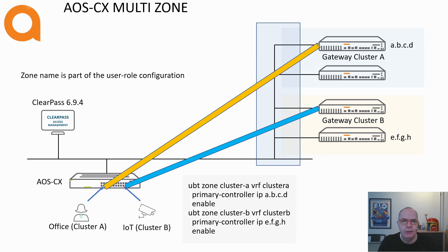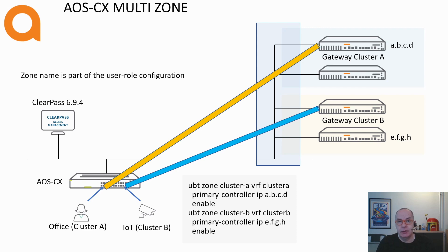A cool new feature in AOS CX is the ability for multi-zoning. With multi-zone, you can create multiple profiles on a switch, with each profile connecting to a different Gateway cluster. This feature gives you a lot of flexibility in terms of selecting the appropriate forward path for different endpoint groups.